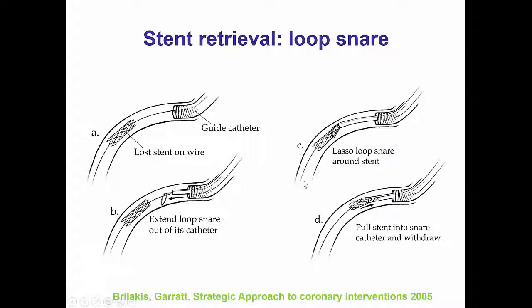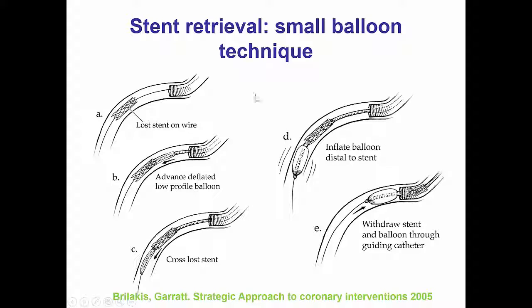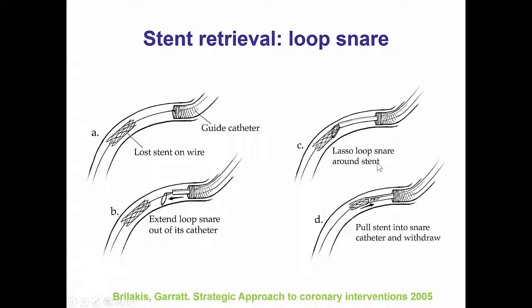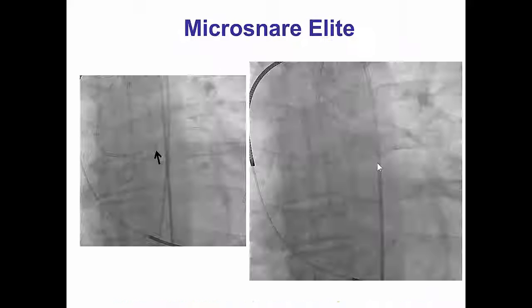The easiest way to remove a lost stent is the small balloon technique: a small balloon is advanced through the lost stent, inflated distally, and then the whole assembly is withdrawn. Another way to do this is using a loop snare to snare the stent and get it out.